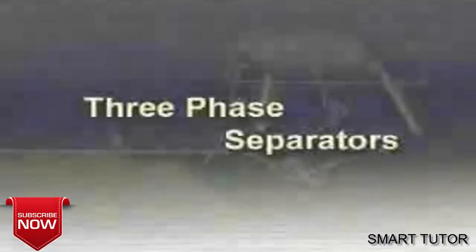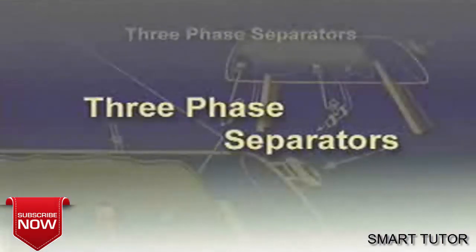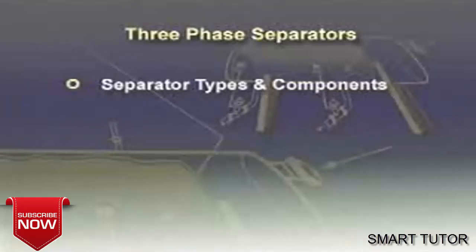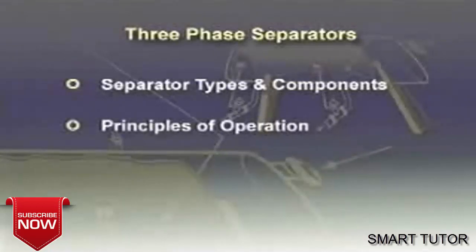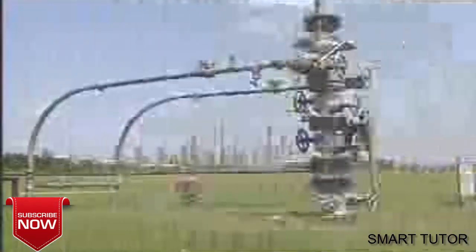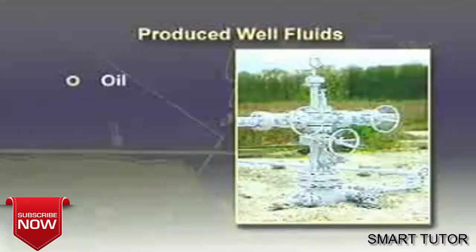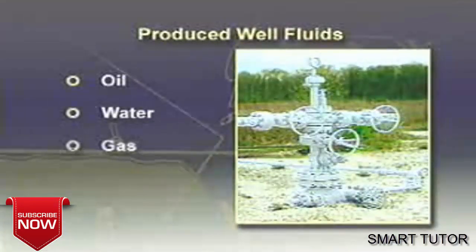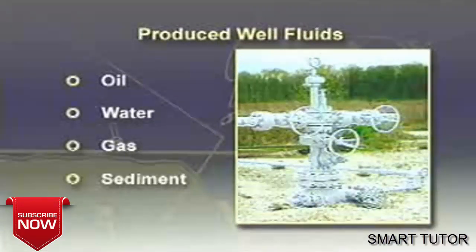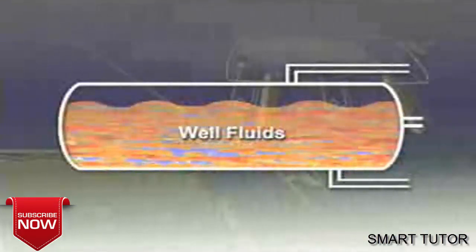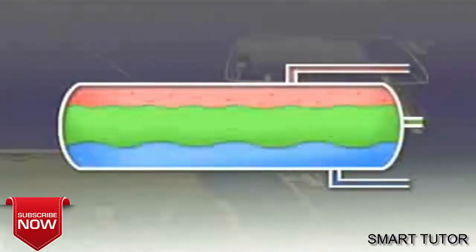This module on three-phase separators describes separator types and components, principles of operation, and design procedures. Produced well fluids typically consist of varying amounts of oil, water, gas, and sediment. The first step in processing these fluids is to split them up into their individual components.